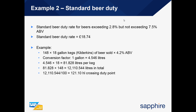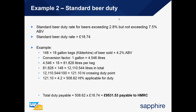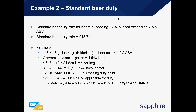Taking those 12,110 litres and dividing by 100 gives just over 121.10 hectolitres crossing the duty point. Multiplying 121.10 by the ABV of 4.2 gives 508.62 hectolitres as a percentage applicable for duty. The total duty payable will be 508.62 multiplied by the standard duty rate of £18.74, giving a total of £9,531.53 payable to HMRC.